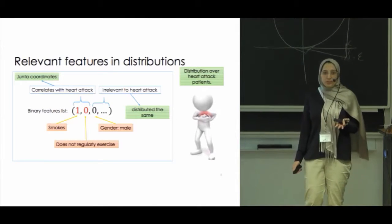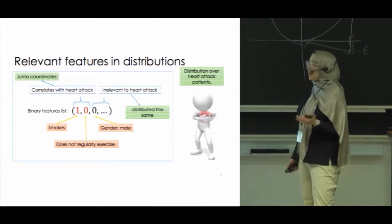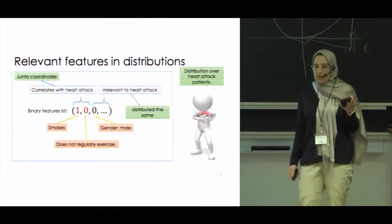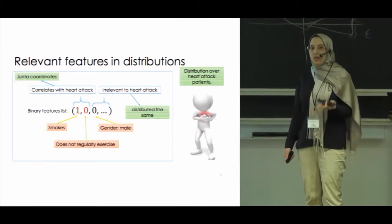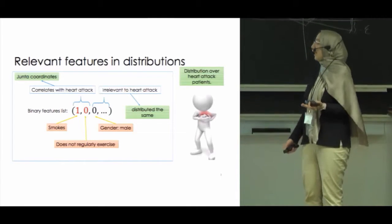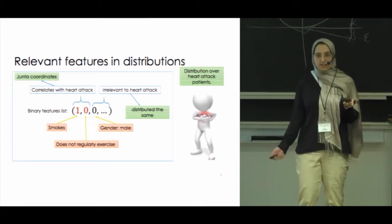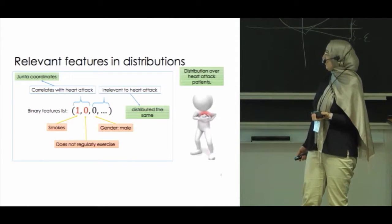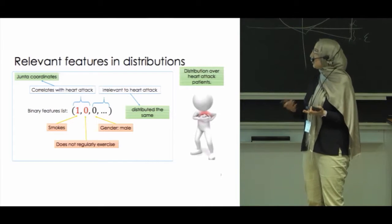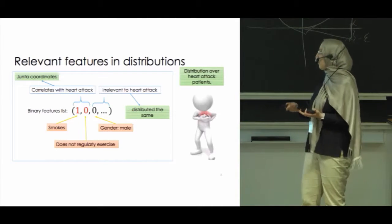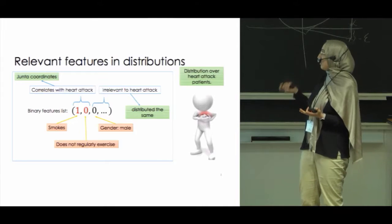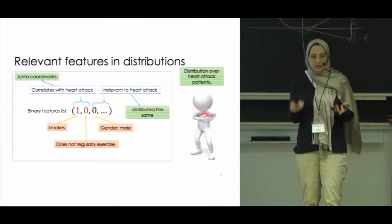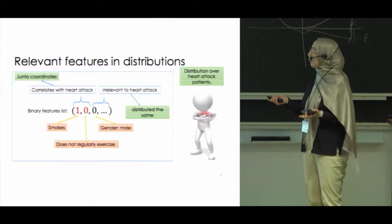But what does it mean to be irrelevant? If you see a bunch of patients as samples and you see like half of them are male and half of them are female, you may conclude that heart attack does not correlate with gender. So if a feature is distributed as you would expect, you can say these are irrelevant features, and the rest of the features would be considered relevant features — and I'm going to call them junta features.